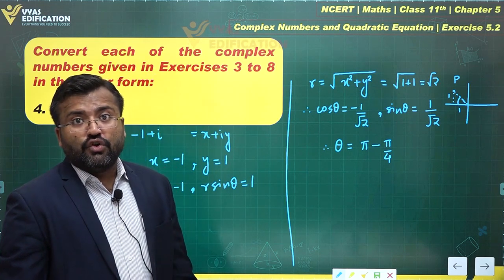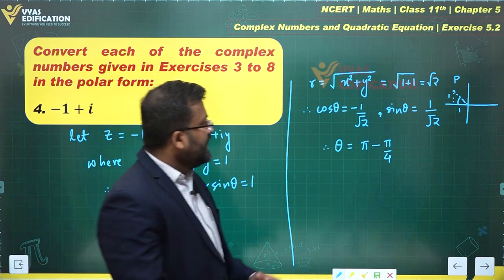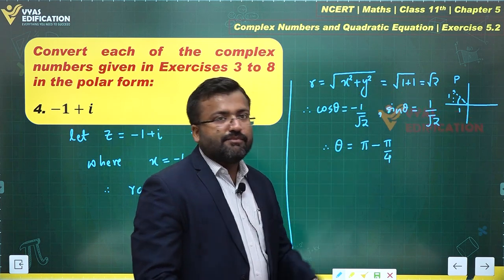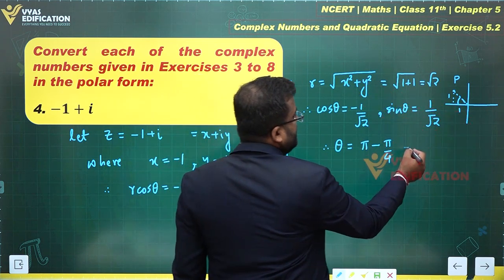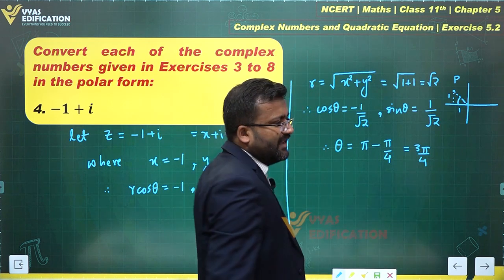This alpha I am talking about, tan alpha would be equal to 1, and therefore alpha would be equal to pi by 4. Implying theta would be pi minus pi by 4. This gives me the value of theta as 3 pi by 4. That's pretty simple.